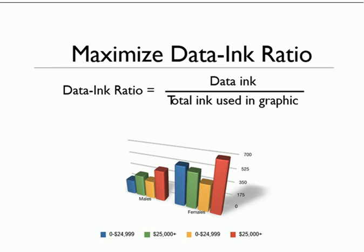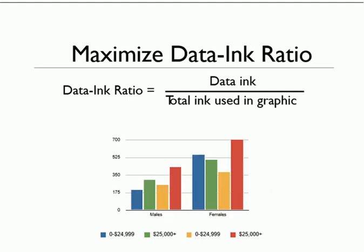The data-ink ratio principle applies to visualizations that use 3D graphics or more visual space. It tells us to reduce ink in our visualization by eliminating 3D elements. When you apply this principle, you use less ink and more meaningful space. Maximizing the data-ink ratio means you remove redundant data and redundant elements from your visualization, including avoiding 3D charts and graphics.